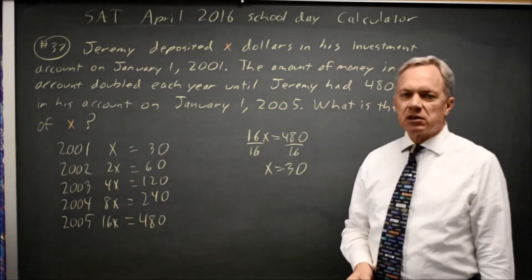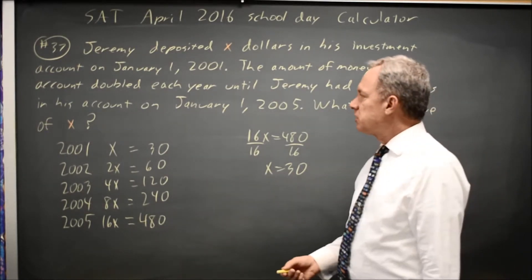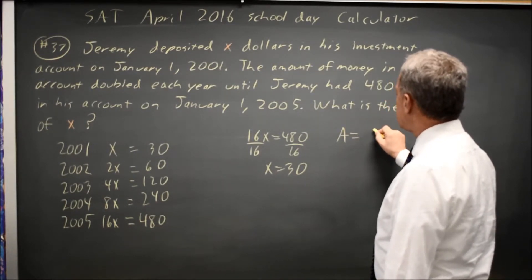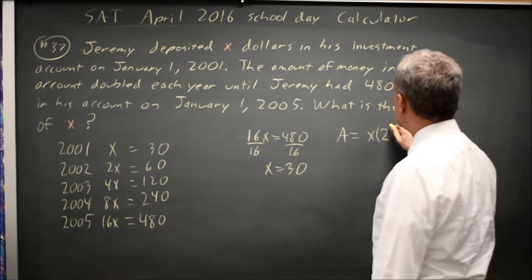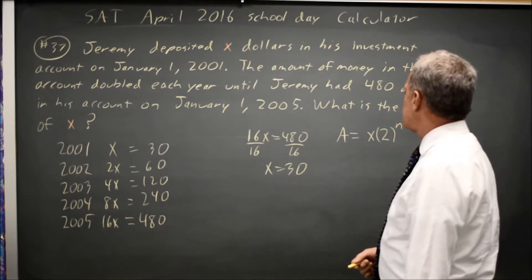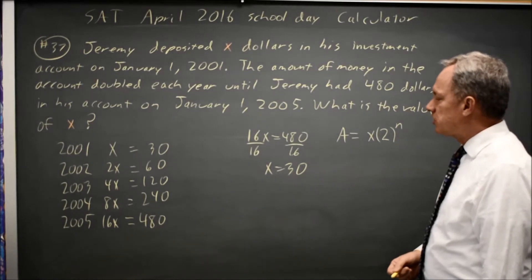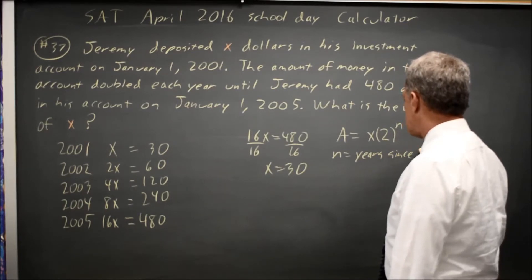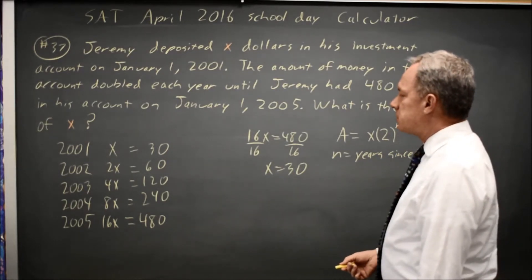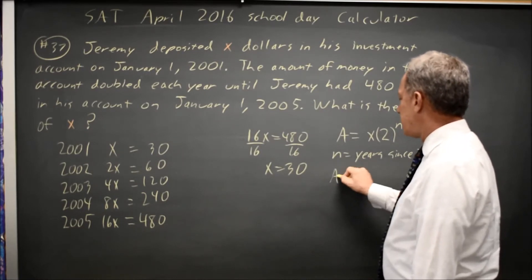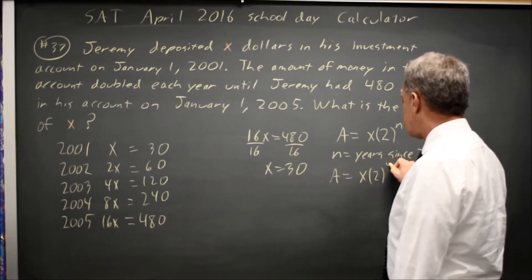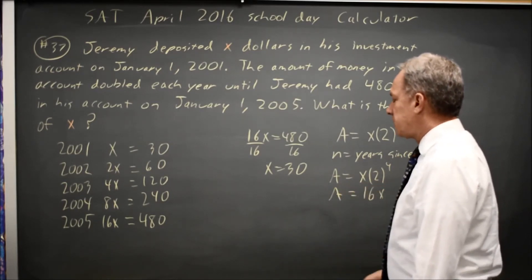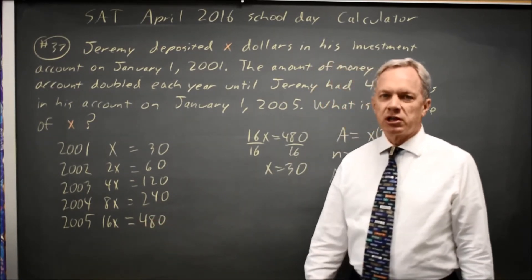Either direction works. They're both mathematically correct. As a third alternative, I could say my amount equals X times 2 to the N, where N is the number of years since 2001, which means in 2005 where N equals 4, your amount is X times 2 to the 4th. 2 to the 4th is 16, so that's 16X, and again 16X equals 480.